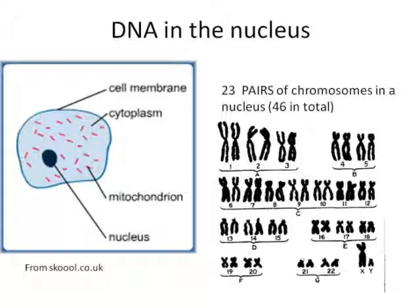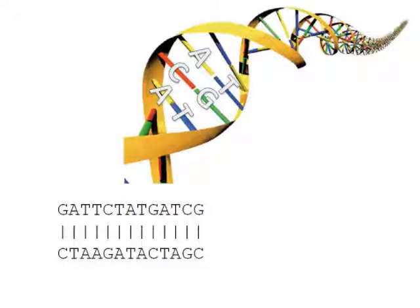So 23 pairs of chromosomes, 46 in total. DNA is made up of bases. We call the bases A, G, C and T, and you might be asked to show how they pair up. C pairs up with G and A pairs up with T. The way to remember that is straight edges, T and A, go together, and curly letters, C and G, go together.